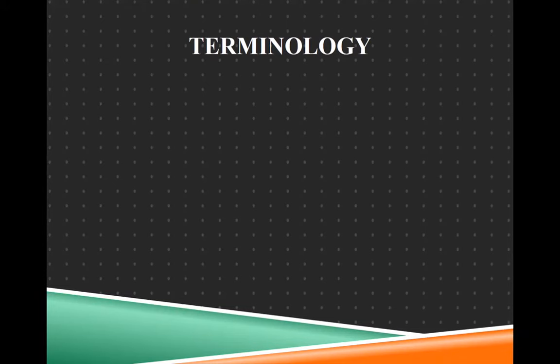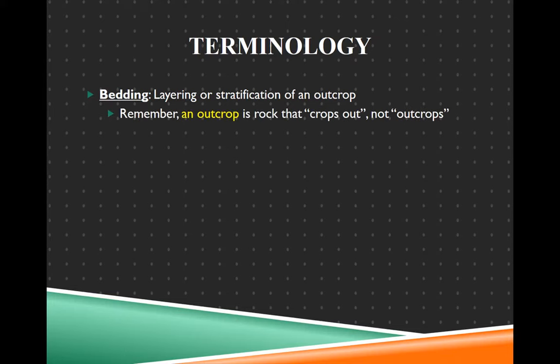Let's talk about some terminology. This is bedding — the layering or stratification of an outcrop. This is what you can see, like those layers in the last two photos. A quick note: an outcrop is a noun. It is a word that means rock that crops out of the landscape to where you can see it. Rocks crop out, but they don't outcrop. Outcrop is not a verb.